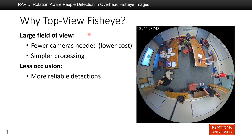We choose top-view fisheye cameras to detect people because of two reasons. First, fisheye cameras have a large field of view, which means we need fewer cameras to cover a room, so it requires simpler processing to build hardware. Also, there is less occlusion from top-view, so a top-view camera can capture more information about people, making detections more reliable.